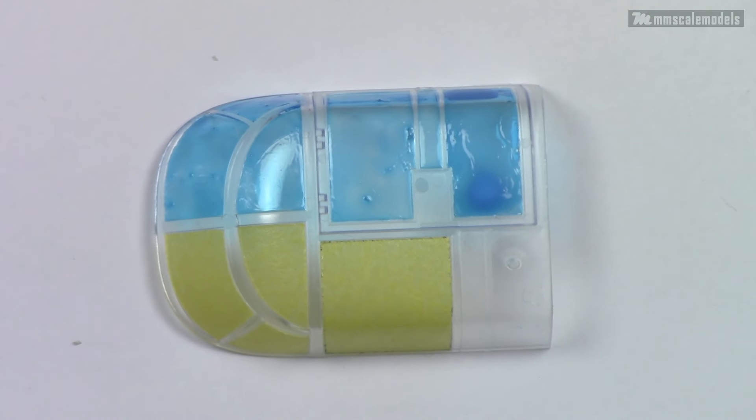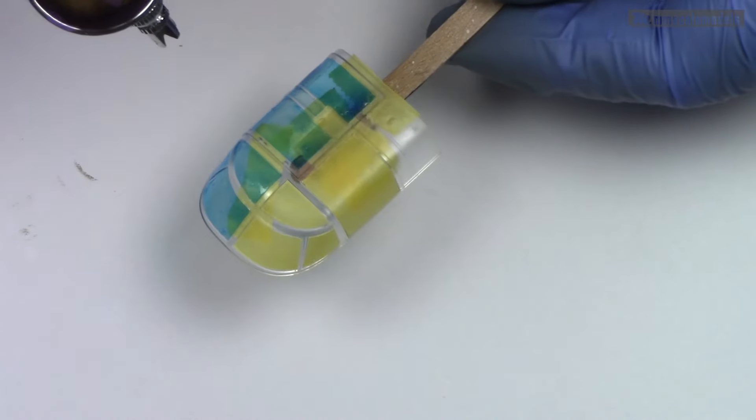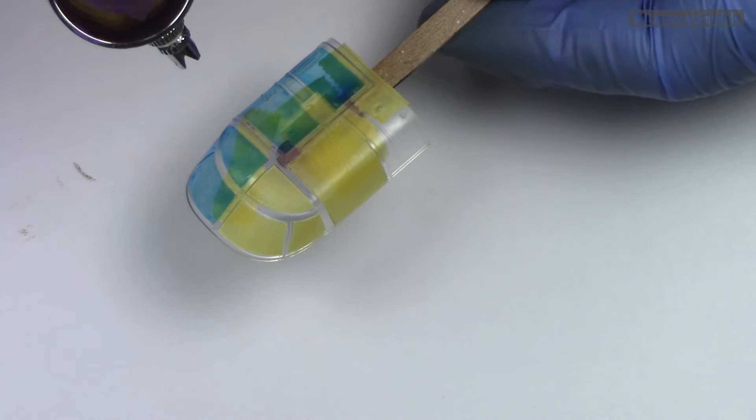Now the exterior part of the canopy is masked. It took me about 10 minutes for each side. Now let's apply some paint and examine the results.